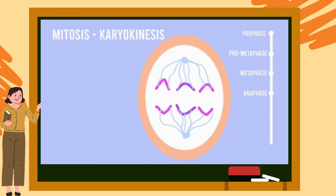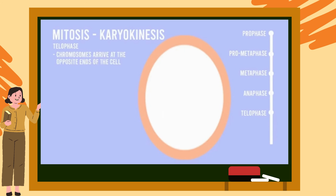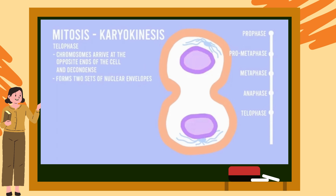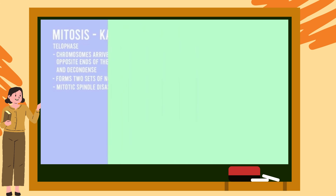Finally, during telophase, the chromosomes arrive at the opposite poles of the elongated cell and begin to decondense. The cell then forms two sets of nuclear envelopes which surround each set of chromosomes. Furthermore, the mitotic spindle disassembles into its constituent monomers, which will be used to support the structure of each daughter cell.